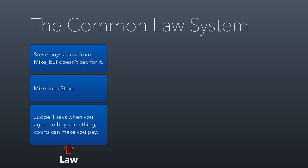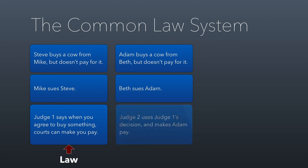If we fast forward and find Adam buying a cow from Beth but not paying for it, so Beth sues Adam — Judge Two is going to look at the circumstances and say, this is just like the case of Mike versus Steve. In that decision, the judge said that if you agree to buy a cow, you have to pay for it. So in Beth v. Adam, Judge Two will use Judge One's decision to make Adam pay. This is reinforcing old law, using it again as precedent.